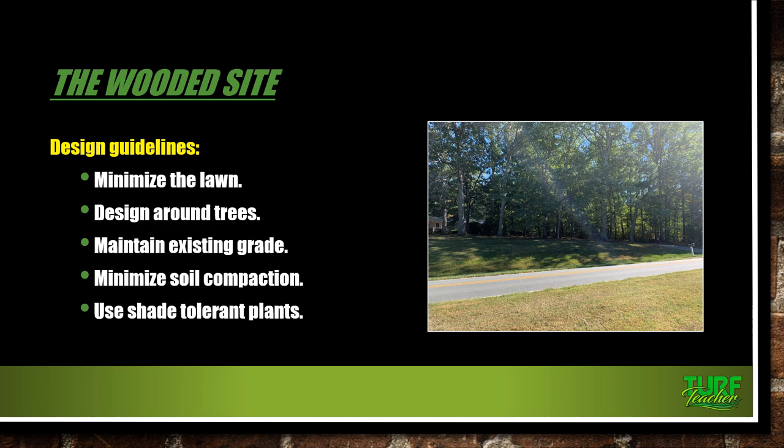When you have a wooded site, the idea is to minimize the lawn — it's hard to get grass to grow in the shade. There are shade mixes, but it's better to have minimum grass and create natural bed lines and let the woods be part of the landscape. Design around the existing trees; don't try to take them down. Maintain the existing grade, minimize soil compaction with fall aeration and seeding, and use shade-tolerant plants like rhododendrons and azaleas.